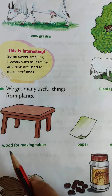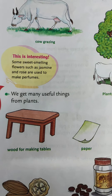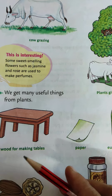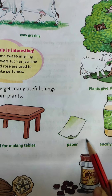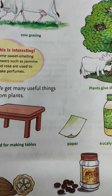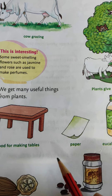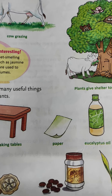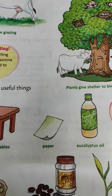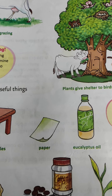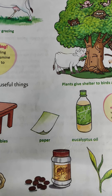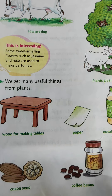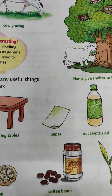We use wood to build our houses and buildings. We also get oil from plants. Likewise, we get cocoa seeds, coffee beans, and tea from plants.